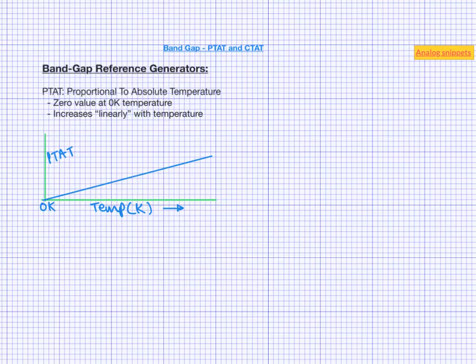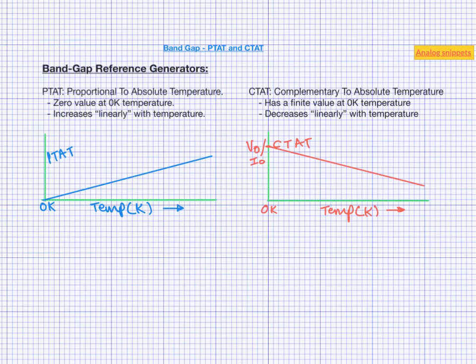CTAT stands for complementary to absolute temperature. A CTAT voltage or current decreases linearly with temperature. Now bear in mind that complementary is not same as inversely proportional. To make this point clear, let us write the mathematical equation of these quantities.